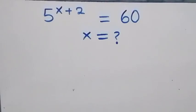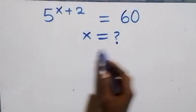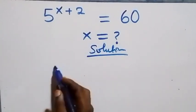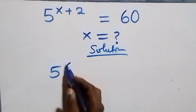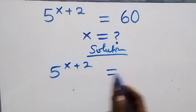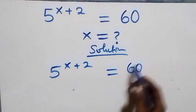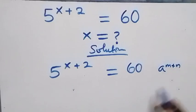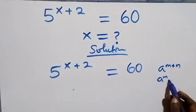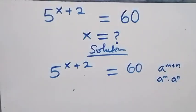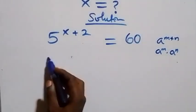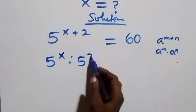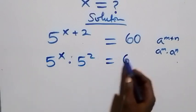Hello, welcome. Here we solve a nice exponential equation: 5 raised to the power x plus 2 equals 60. We apply the exponent rule: a raised to power n plus n is the same as a raised to power n times a raised to power n. So this becomes 5 raised to power x times 5 squared equals 60.